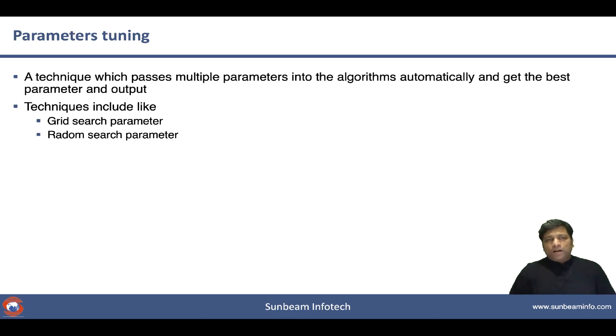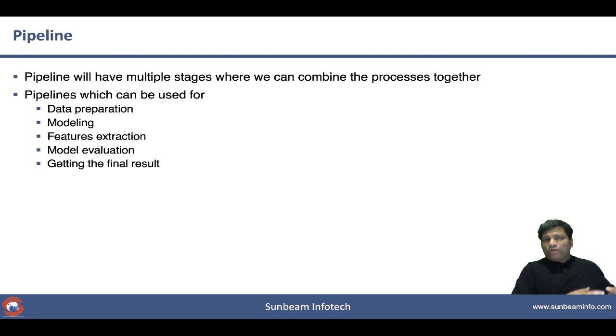Once we start calling those algorithms, we need to pass different parameters. How would we know what is the best value for the parameter? This technique, parameter tuning, will decide what is the best value for it by using different techniques like grid search or random search parameters.